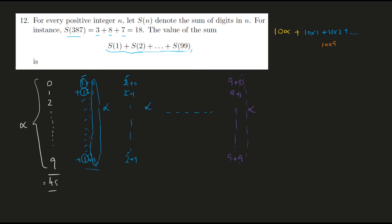If I were to substitute the value of alpha in this, that is 45, let me substitute it later. Let's see what this expression is: it's 10 alpha plus 10 times of 1 plus 2 plus dot dot dot 9, and this term is again alpha.